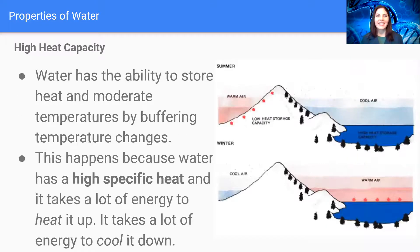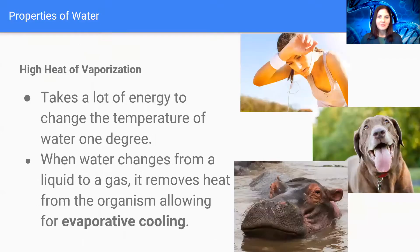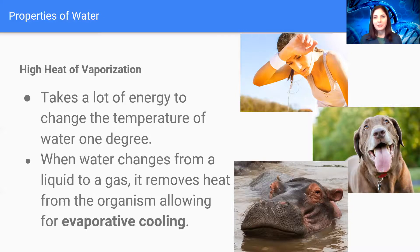Water also has a high heat capacity, meaning that it has the ability to store heat and moderate temperatures by buffering those temperature changes. It takes a lot of energy to raise water by one degree Celsius. It happens because water has something called a high specific heat. It takes a lot of energy to heat it up and it takes a lot of energy to cool it down as well. This helps really moderate the temperatures around the earth, especially coastal areas and areas that are surrounding big bodies of water.